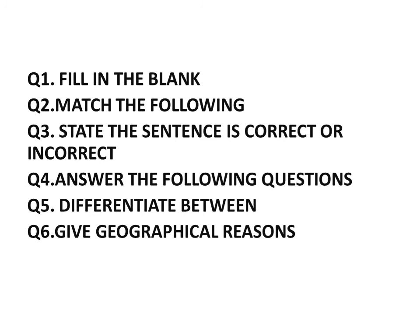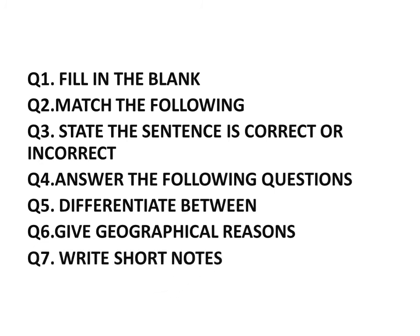Now we move on with the short notes. The first short note is fallow land. Fallow land is an agricultural land which is temporarily not in use. In order to improve the fertility of the soil, the farmer does not use a part of his agricultural land for one or two seasons.